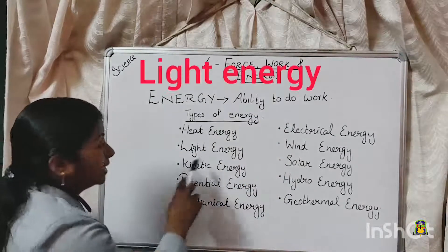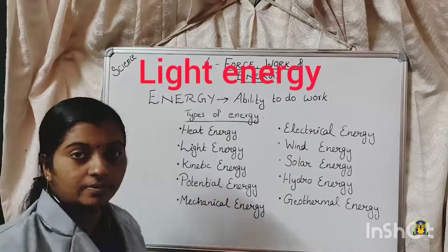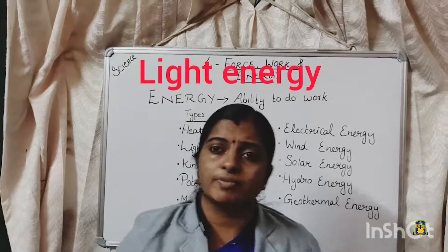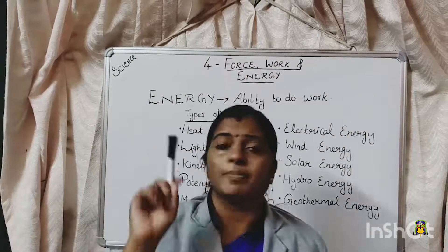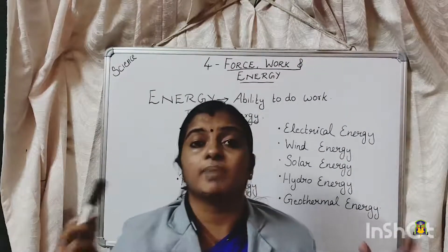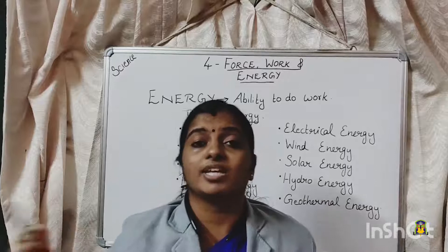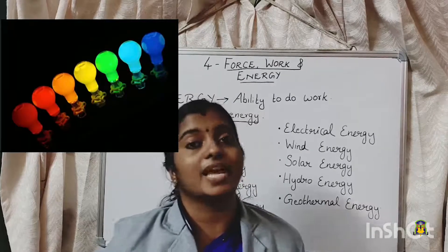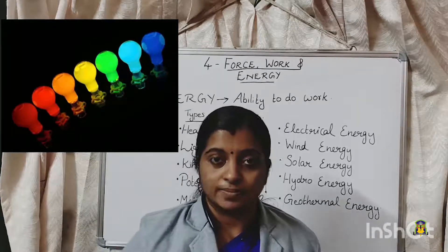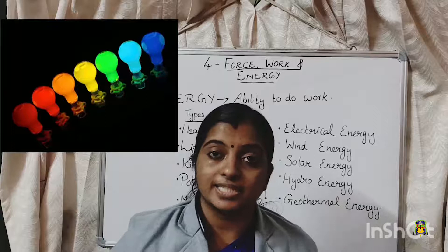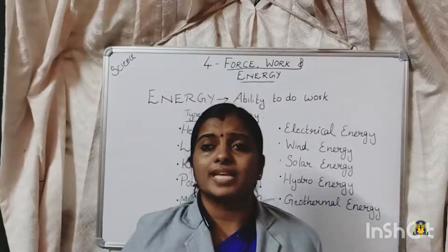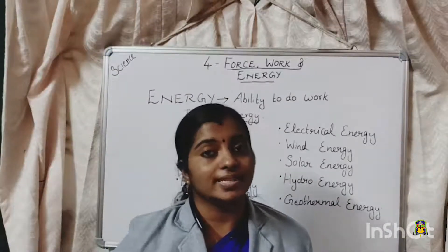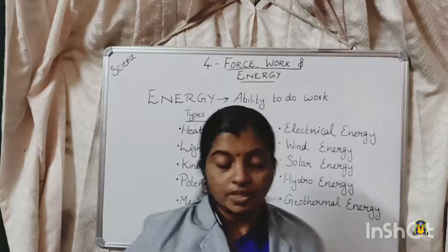Then, light energy. Where do we get light? When we switch on the switch, what will happen? We can see that the bulb is glowing and we are getting light. That is an instance where we use light energy. Light energy examples include CFL, normal lamps — all these are giving us light energy.